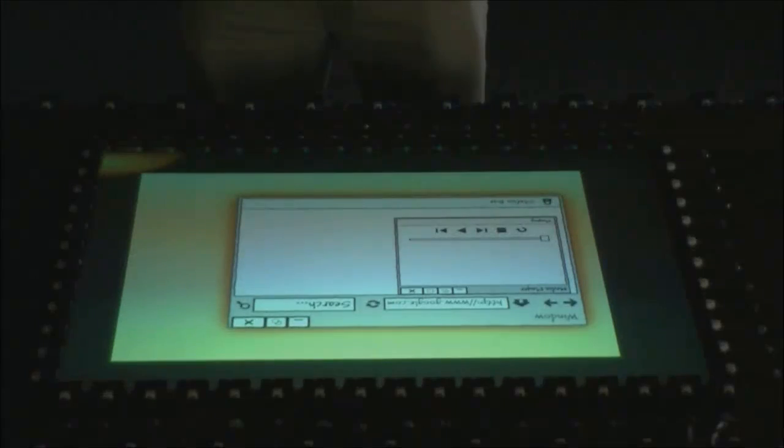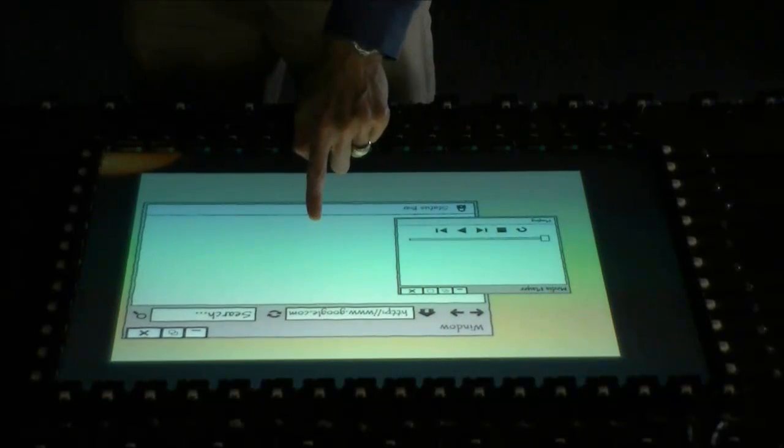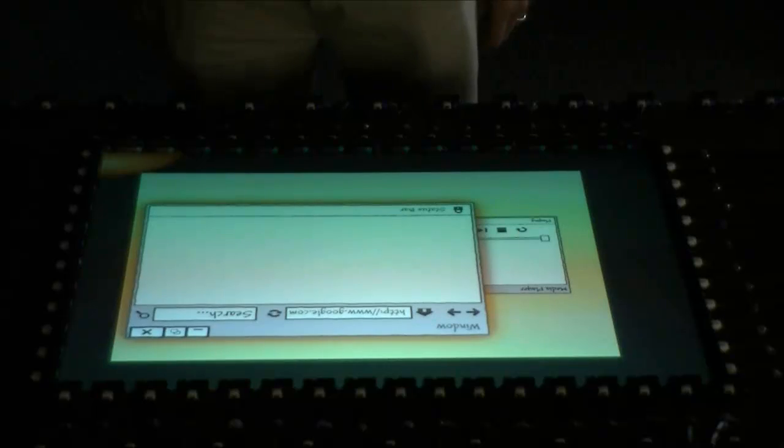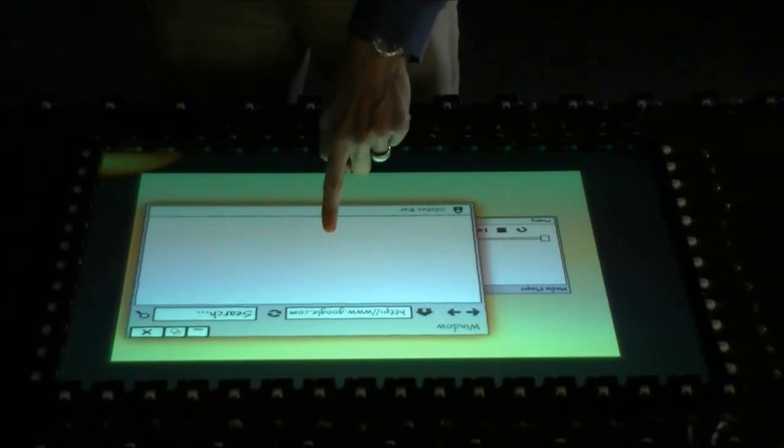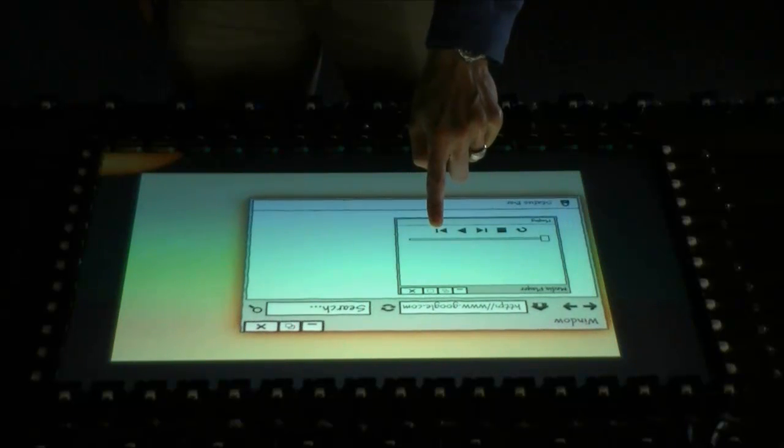ProxySketch also supports new gestures that combine touch and depth information. If a user wishes to rearrange the z-order of a component, they can touch the component and move their arm upwards, thereby moving the components to the topmost position. To move a component to the bottom, the user moves their arm downwards while touching the component.